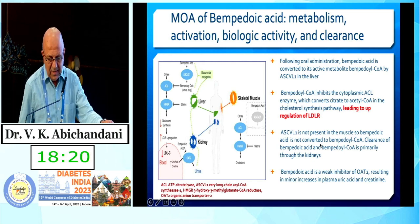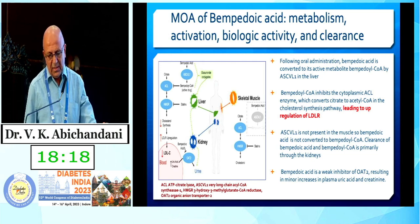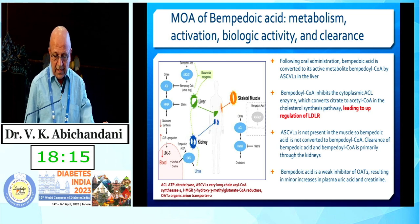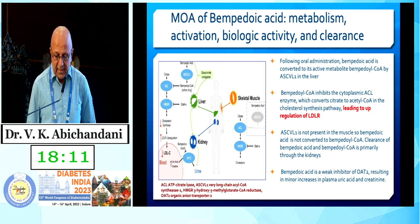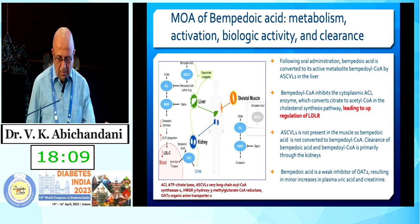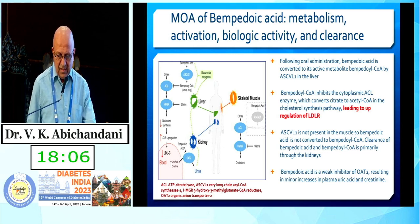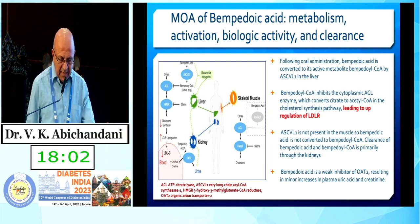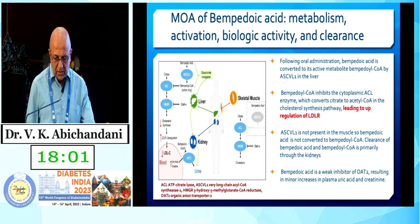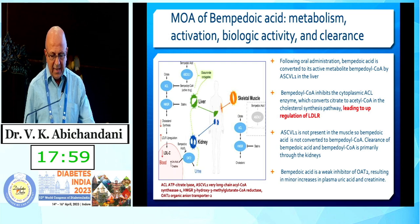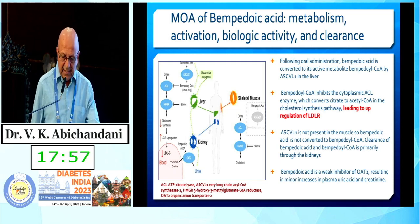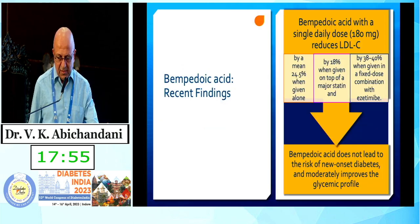ACSVL1 is not present in muscles, so there is no conversion of Bempedoic Acid — the prodrug — to the active drug in the muscles. Clearance of both the prodrug and the active drug is primarily through the kidneys. Bempedoic Acid is a weak inhibitor of OAT2 (Organic Anion Transporter 2), which results in a minor increase in plasma uric acid and creatinine levels.